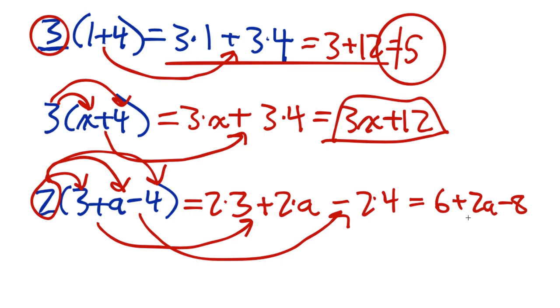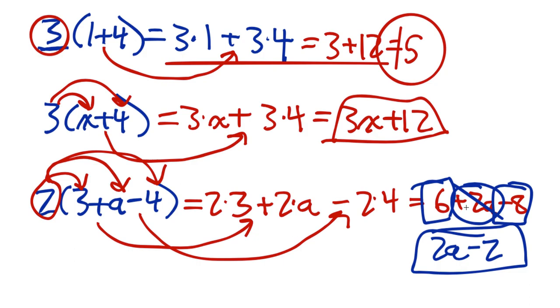In this last example, 6 plus 2a minus 8, I can collect like terms. First I take the variable term. That's going to be 2a. There's no other variable term. I'm going to box the numbers. That's 6 minus 8. 6 minus 8 is negative 2 or minus 2. And then that one's done, 2a minus 2.